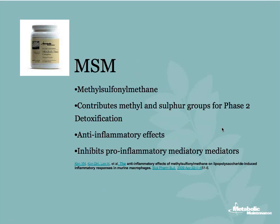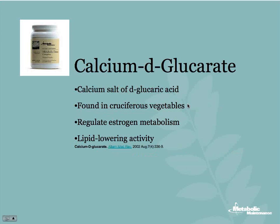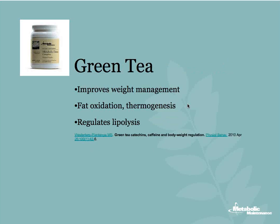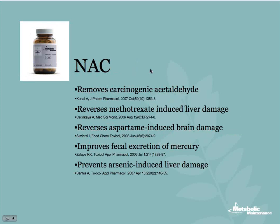Calcium deglucrate is another favorite, especially for metabolizing exogenous estrogens — it's found in cruciferous vegetables and is a fantastic ingredient in the powder. Green tea extract improves weight management, increases fat oxidation through increasing internal temperature, and regulates breakdown of fat — though if your patient is caffeine-sensitive, use the powder in the morning just in case. NAC is one of my most favorite amino acids: it reverses liver damage from multiple drugs including methotrexate, reverses brain damage caused by aspartame, improves fecal excretion of mercury, and prevents arsenic-induced liver damage. Methionine, as a sulfur group, improves oxidative stress, reverses cadmium toxicity, and may actually increase lifespan.